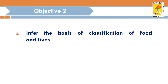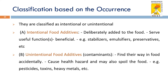Now let's infer the basis of classification of food additives. Additives are classified as intentional or unintentional food additives based on their occurrence. Intentional food additives are those which are deliberately added to food; based on their functional role they have specific benefits to the food in which they are added. Examples include stabilizers, emulsifiers, and preservatives.